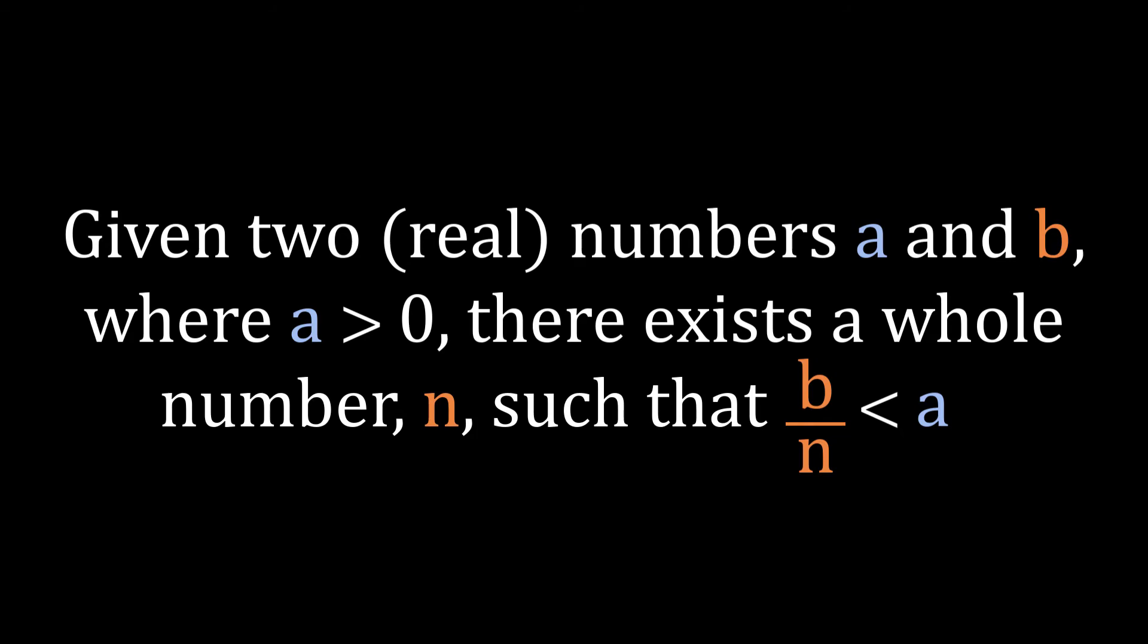With this, just like we can be certain that there's no biggest positive number, we can also be certain there's no smallest positive number. We can only ever get closer and closer to zero.